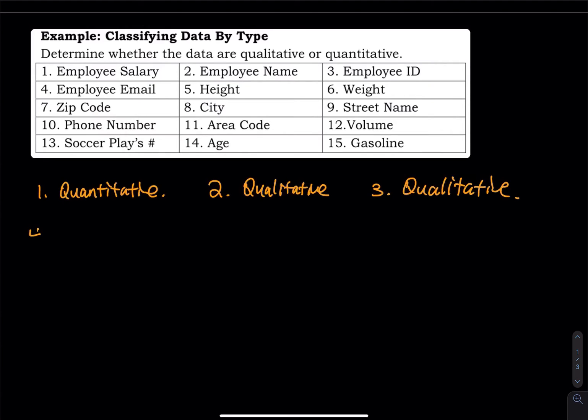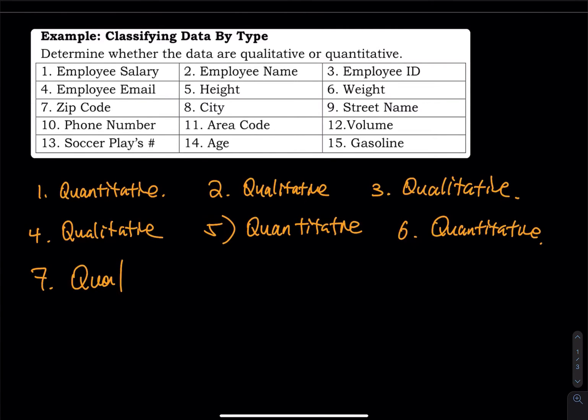Number four, email. Can you add and subtract email? No. So that is qualitative. Number five, height. Add and subtract height is fine. So that is quantitative. Six, weight. Weight must be quantitative. Seven, zip code. Qualitative. And then eight, the name of the city. Qualitative. And then street name. You cannot add and subtract any of those. So that must be qualitative.